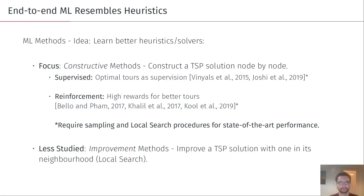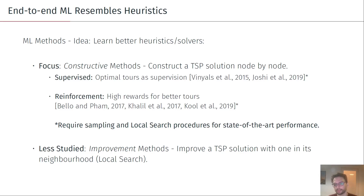What about machine learning? Machine learning has been trying to catch up with these methods. The focus of previous works has been mainly on constructive methods, in which the idea is to construct a TSP solution by sampling node by node. There are two main streams: one using supervised learning in which optimal tours are given as supervision, and also reinforcement learning in which you would attribute high rewards for shorter tours.